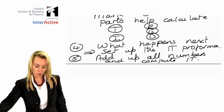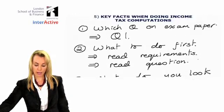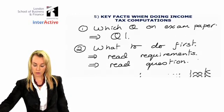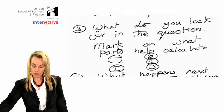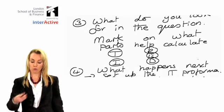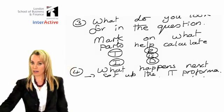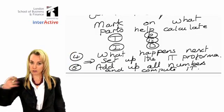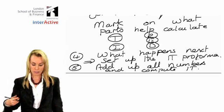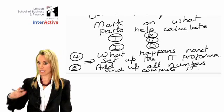When you're doing an income tax computation, the key things to do are: remember it's question one on the paper, read the requirements, read the question. When you read the question, look for information about trading income and mark that on, employment income and mark it on. Then you've got to work out these things and add them all up, take away the personal allowance and calculate your tax.